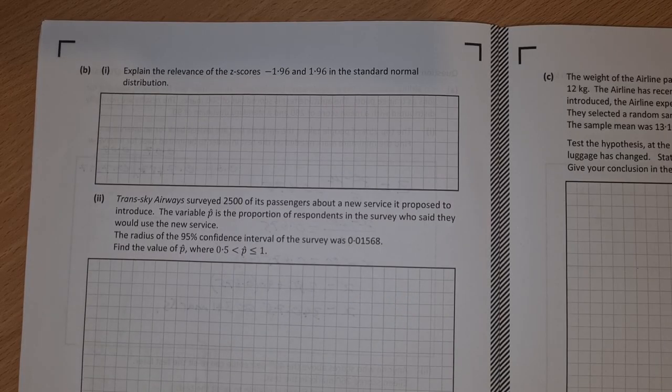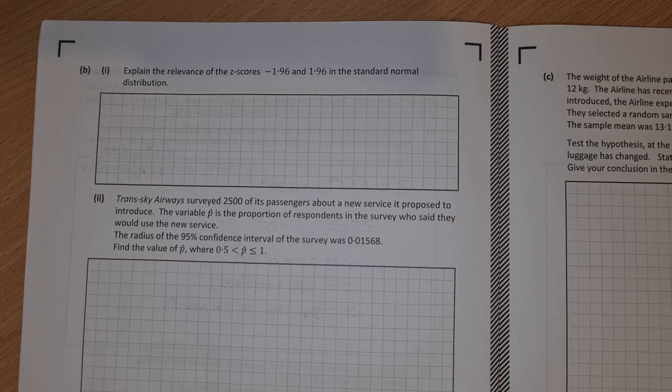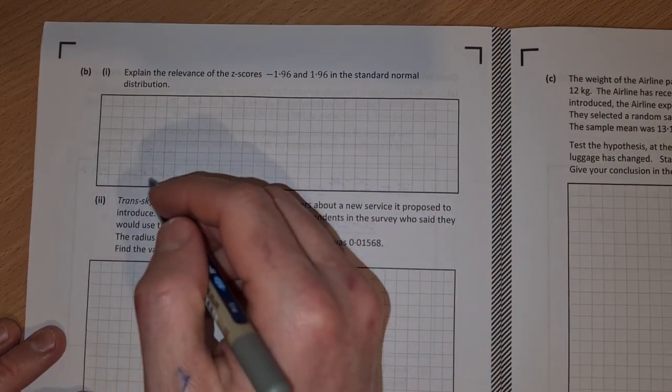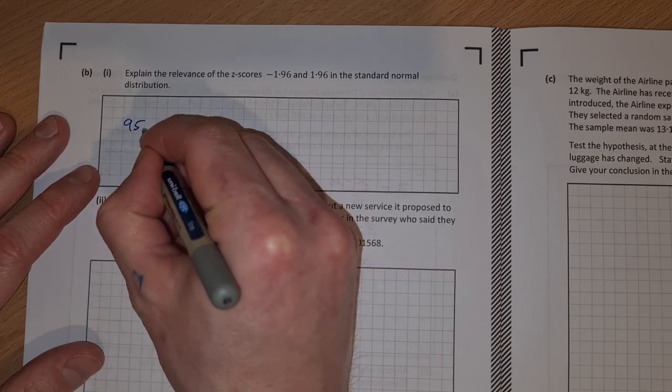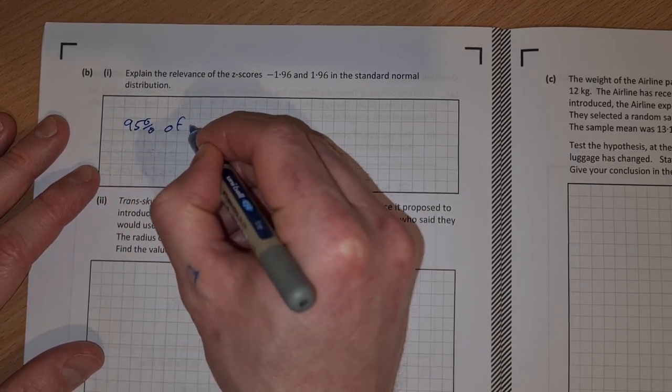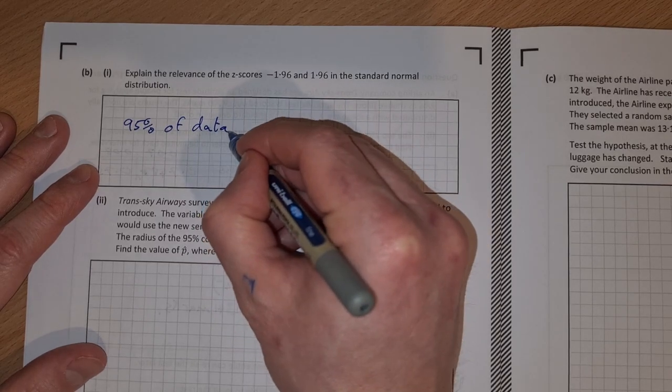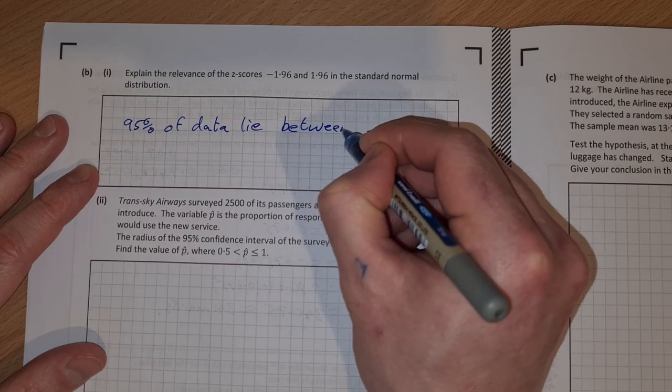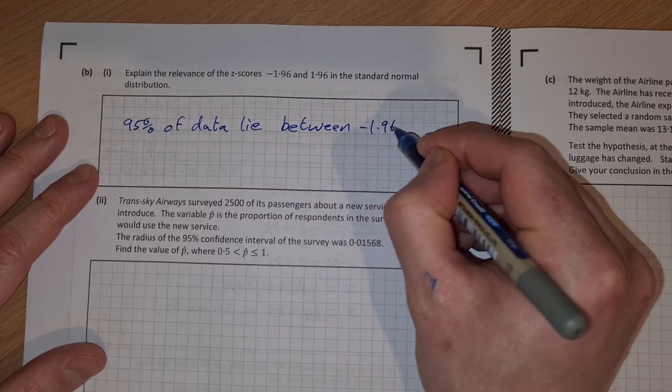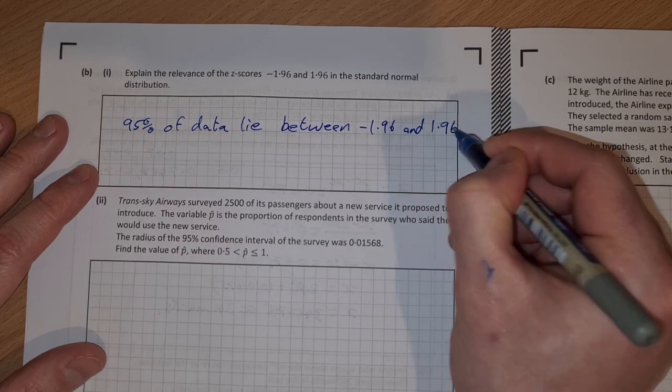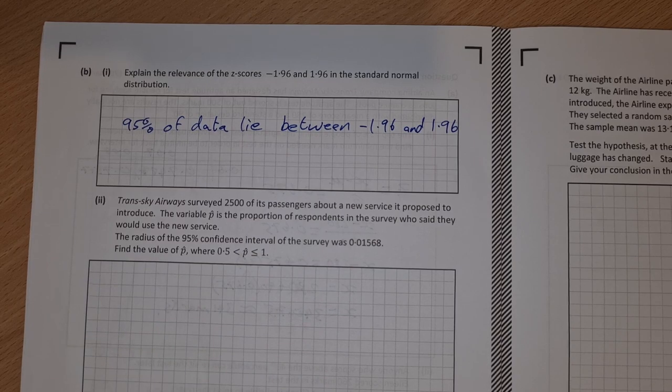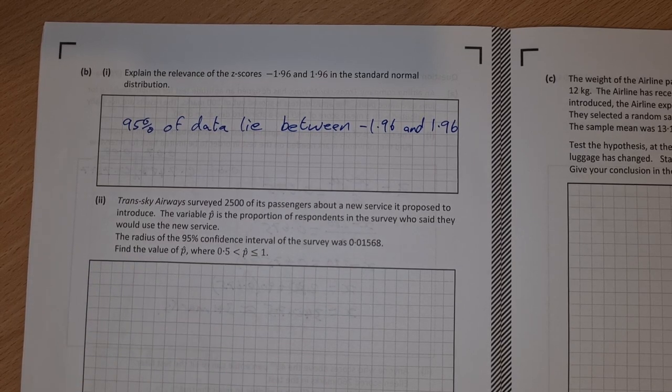On to part B then. Explain the relevance of the z-scores minus 1.96 and plus 1.96 in the standard normal distribution. I think the simplest explanation is that 95% of data lies between minus 1.96 and 1.96. You might draw in your standard curve there to illustrate that better, but I think that would be enough to get the marks.